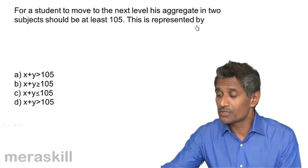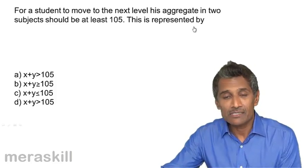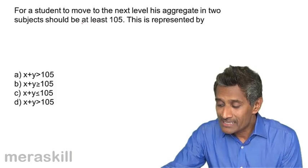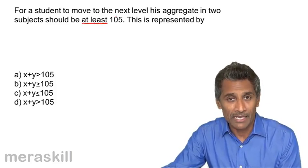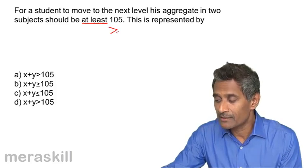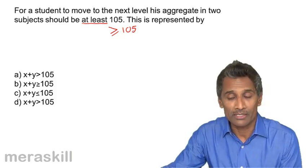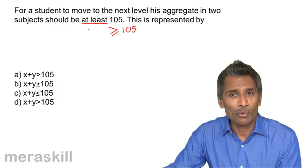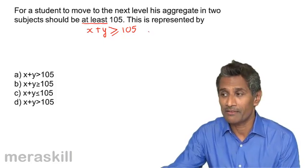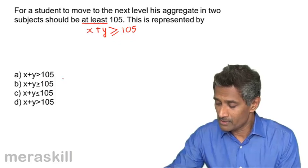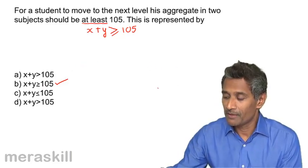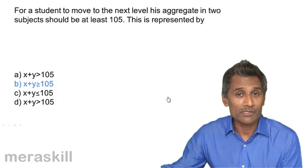For a student to move to the next level, his aggregate in two subjects should be at least 105. When we say at least, it means either you get 105 or more than 105 — that is a minimum eligibility. So it has to be greater than or equal to 105. If in one subject he gets x and the other he gets y, his aggregate x plus y has to be greater than or equal to 105. That is the answer for this particular question.